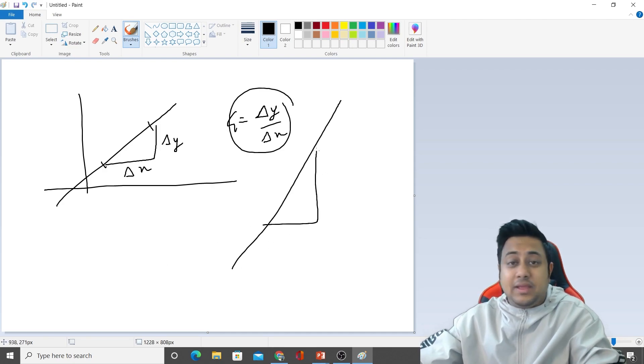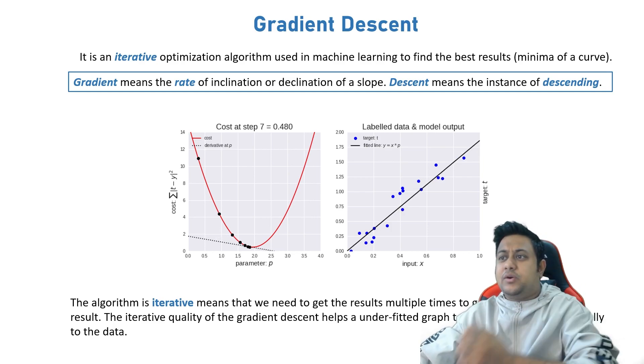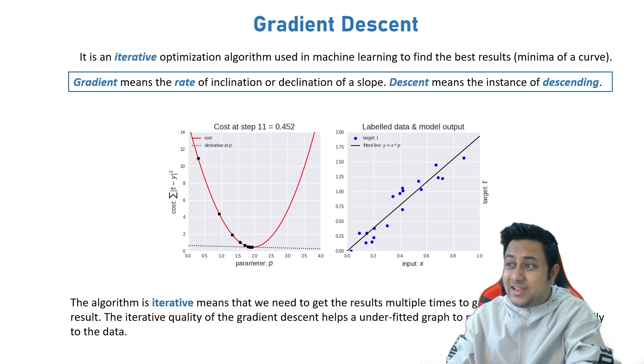If the line is like this, the gradient will be high. If the line is towards your x-axis, your gradient will be low because your delta y is low. Simple.